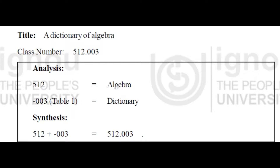You have to remove that hyphen and add the remaining digits to the main class. For example, a dictionary of algebra: the main class is algebra, which is 512. From Table 1, hyphen 003 is dictionary. Remove the hyphen and add that number to the main class, so the final class number will be 512.003.